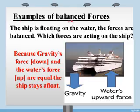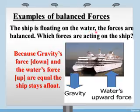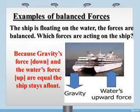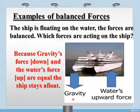Let's see a few examples of balanced forces. First example: a ship is floating on the water — the forces are balanced. Which forces are acting on the ship? The gravity force acts downward and the water force acts upward. They are equal, and that's why the ship stays floating. Look at this picture: gravity is in the downward direction and the water force is in the upward direction — because of that, the forces are balanced.